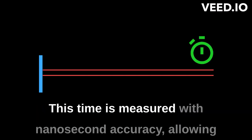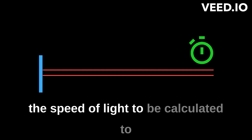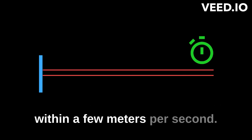This time is measured with nanosecond accuracy, allowing the speed of light to be calculated to within a few meters per second.